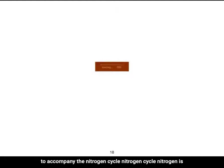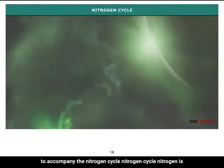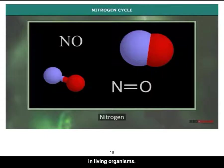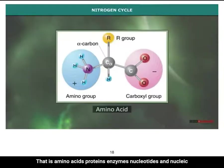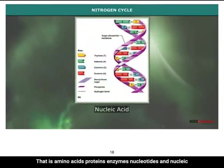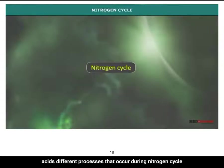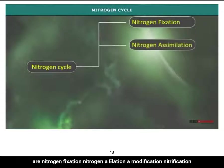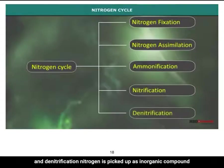And by now you probably guessed there will be a video to accompany the nitrogen cycle as well. Nitrogen is an essential constituent of all major organic compounds present in living organisms — amino acids, proteins, enzymes, nucleotides, and nucleic acids. The different processes that occur during the nitrogen cycle are nitrogen fixation, nitrogen assimilation, ammonification, nitrification, and denitrification.